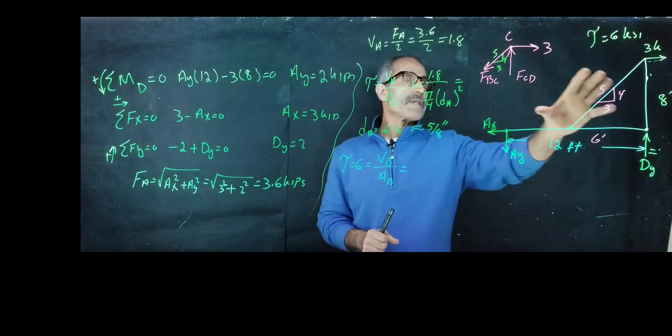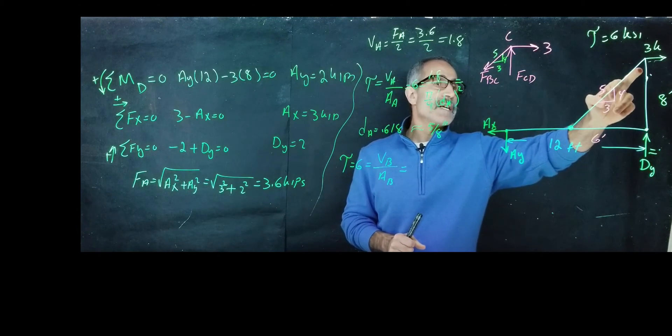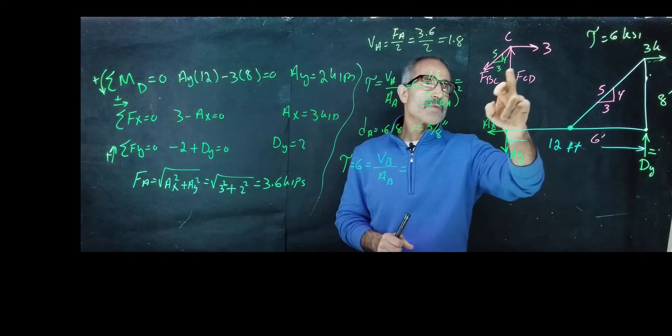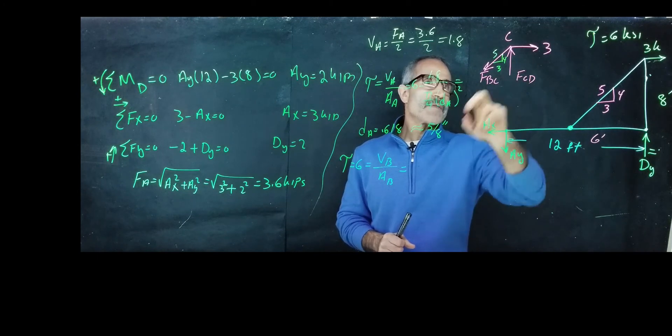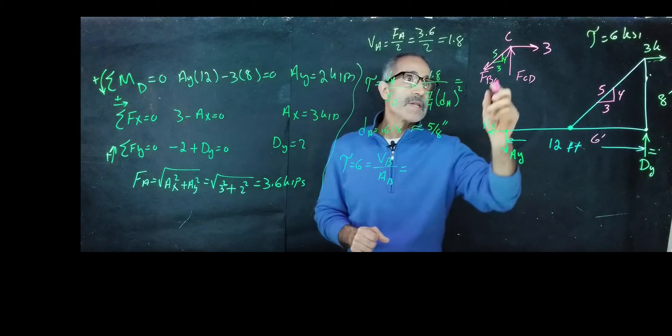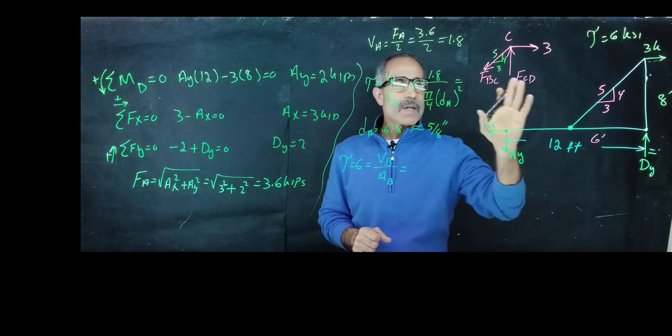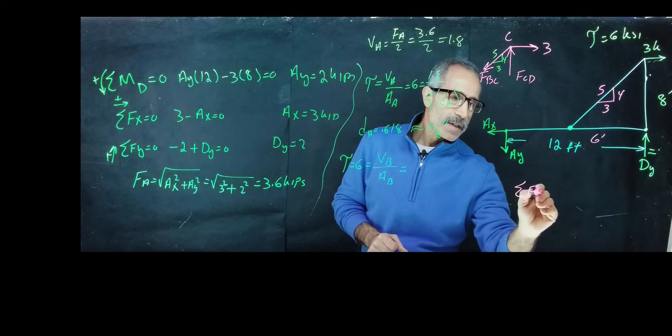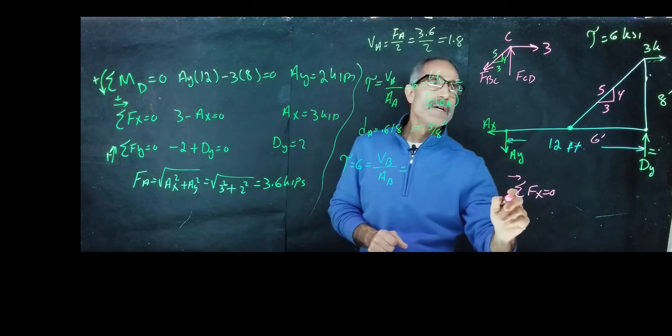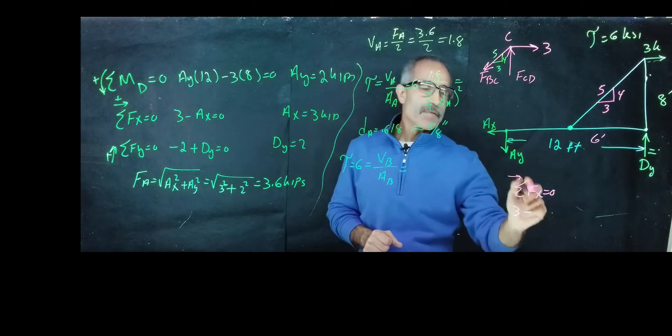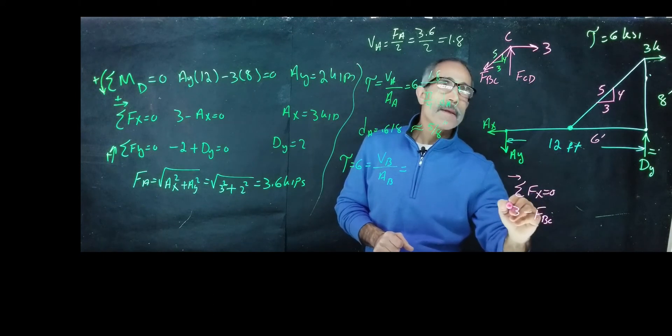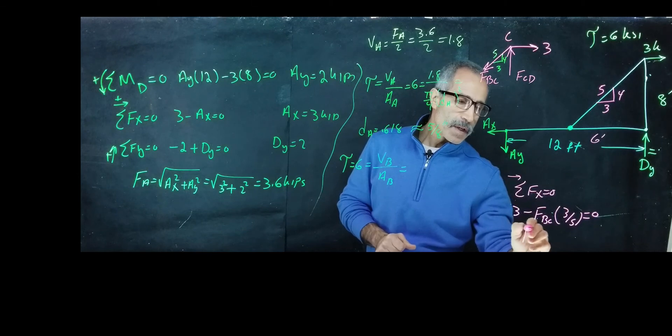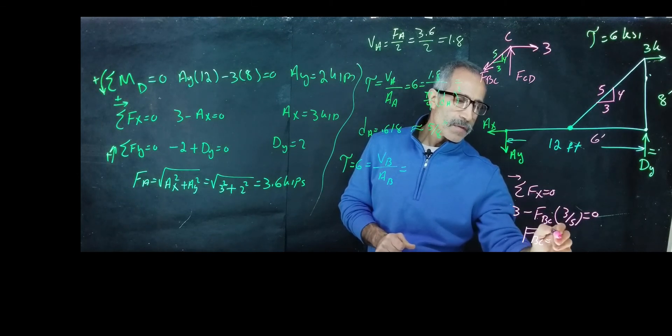And when we draw the free body diagram of joint C right here, we're going to have this force coming up, Fcd, and then we're going to have this force coming down, assuming compression and tension, Fbc. And then we have the 3 kips there. So what are we going to do? We're going to use summation Fx equals zero. And I have 3 minus Fbc times 3 over 5 equals zero. So Fbc comes out to 5 kips.